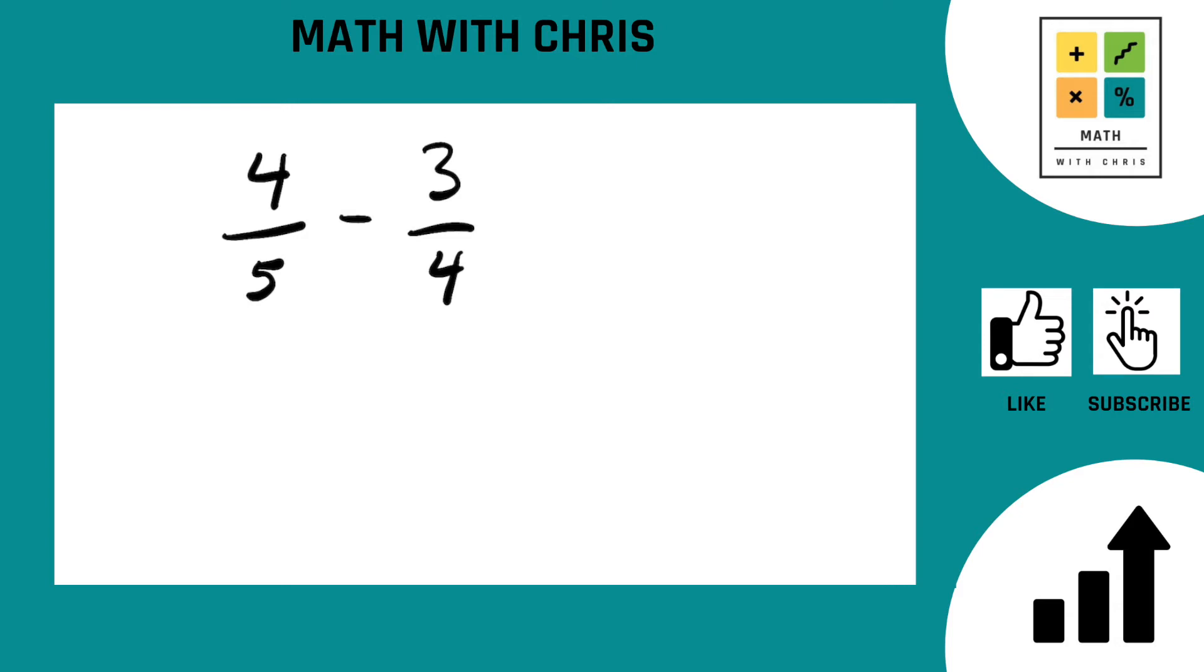Adding and subtracting fractions with different denominators can be a little annoying, but not too bad when we cross-multiply. So the way we're going to cross-multiply is we start in the upper left, that's the 4, cross-multiply down to that other 4, that gives us 4 times 4 is 16.